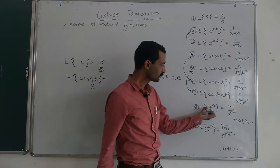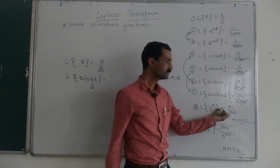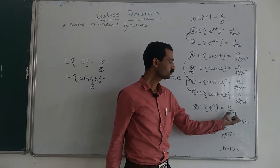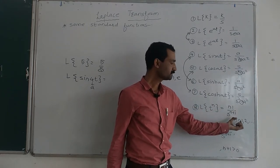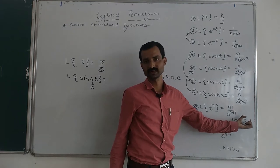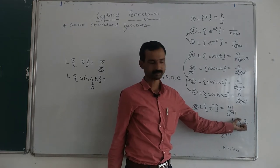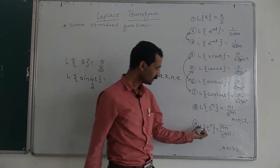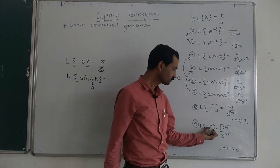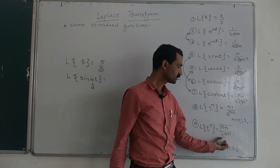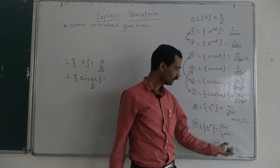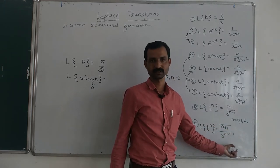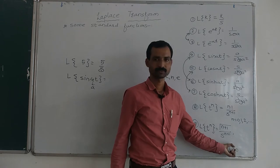Next, Laplace of t raised to n is equal to n factorial upon s raised to n plus 1, where n is an integer, that means 0, 1, 2, 3, and so on. Or we can use another formula: Laplace of t raised to n is equal to gamma(n+1) upon s raised to n plus 1, where n plus 1 is positive or greater than 0.